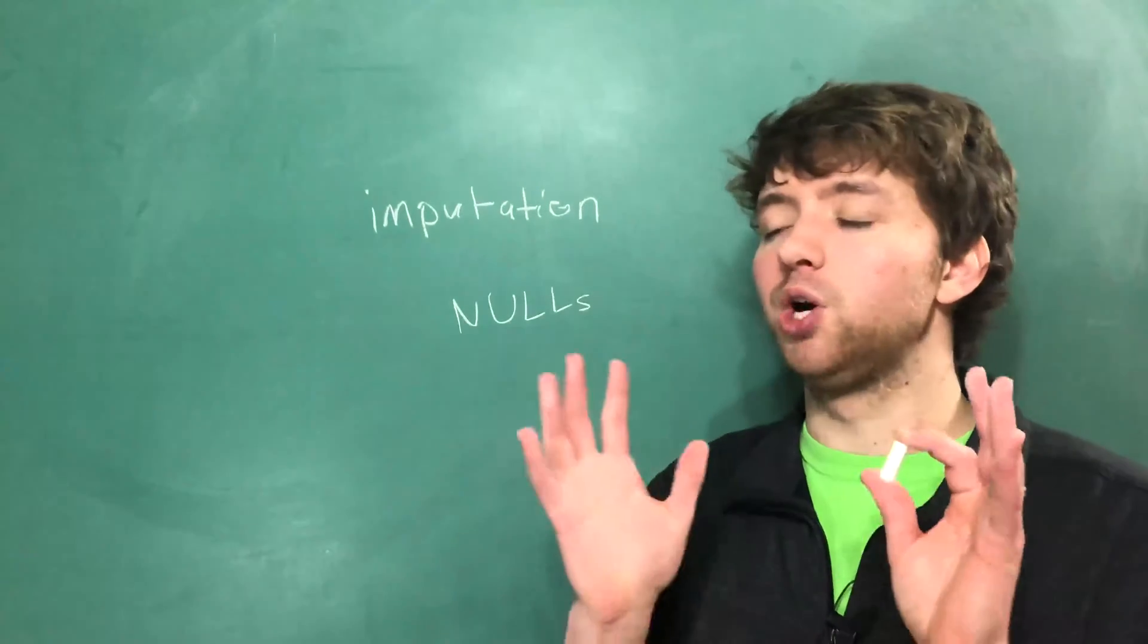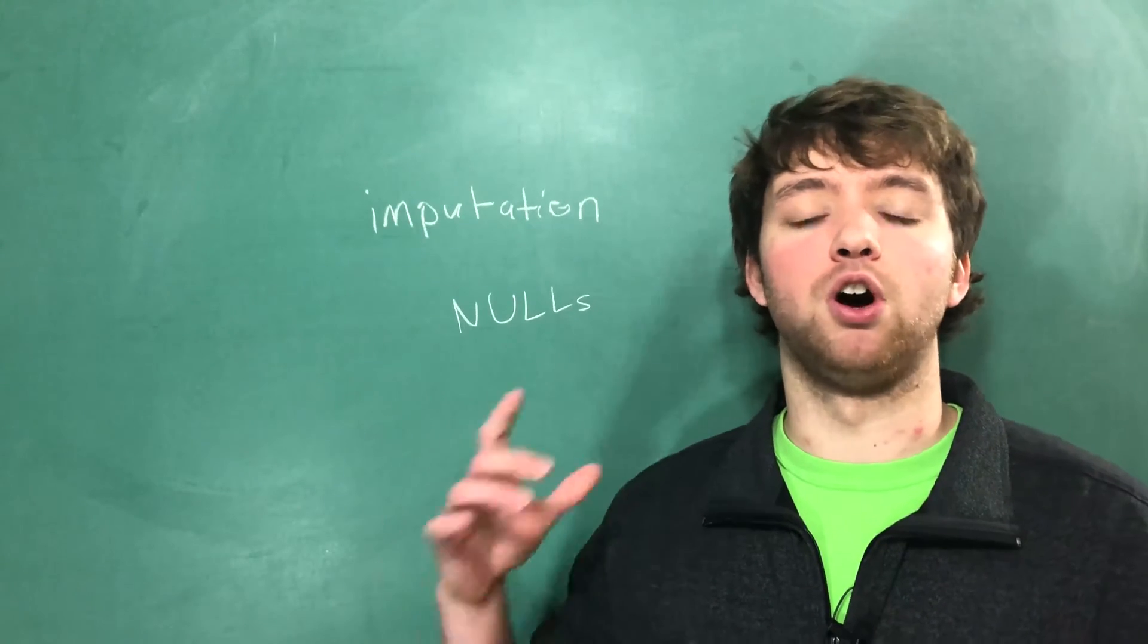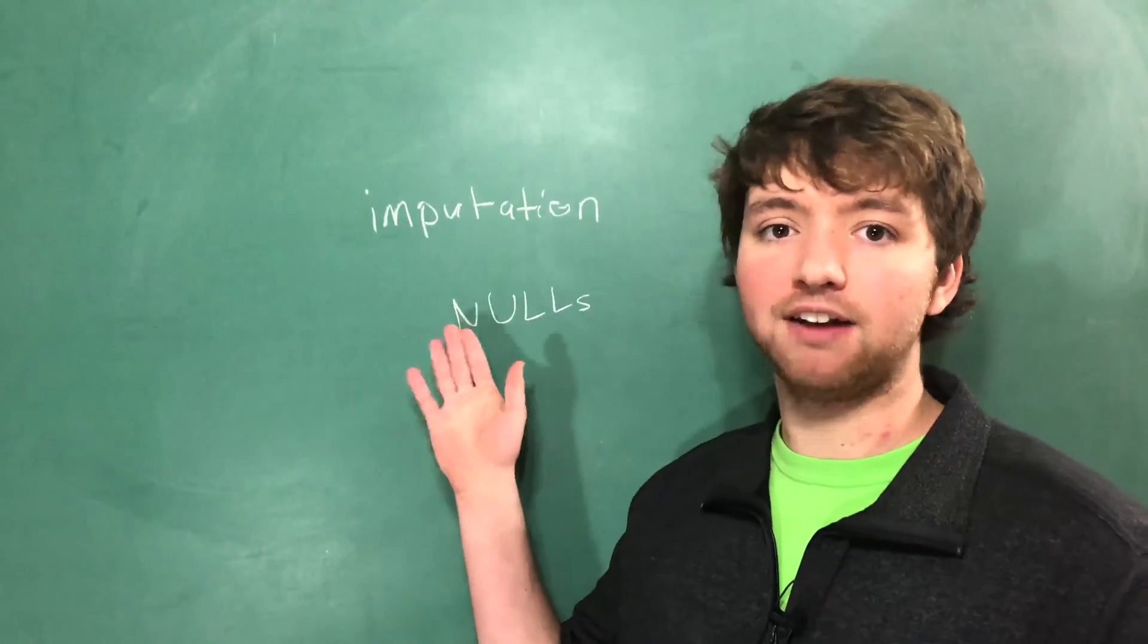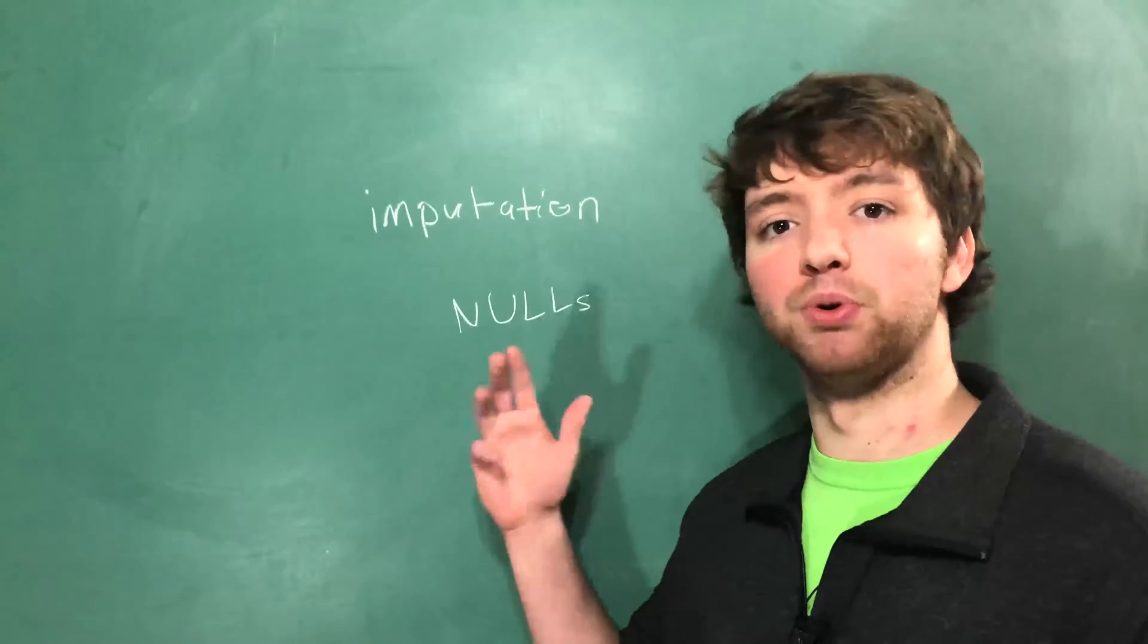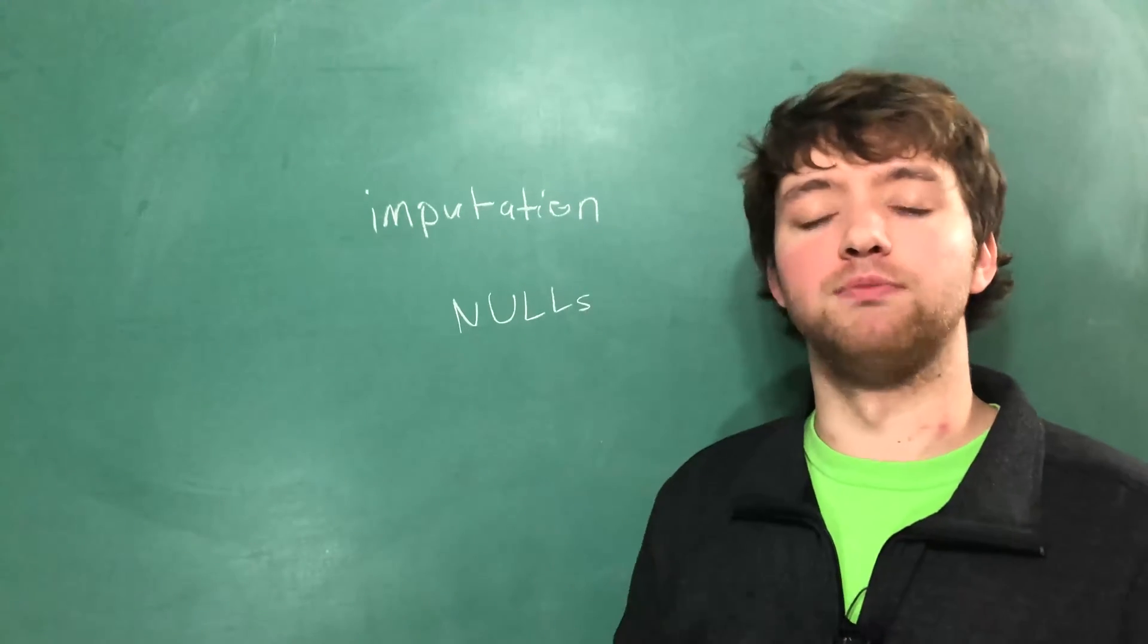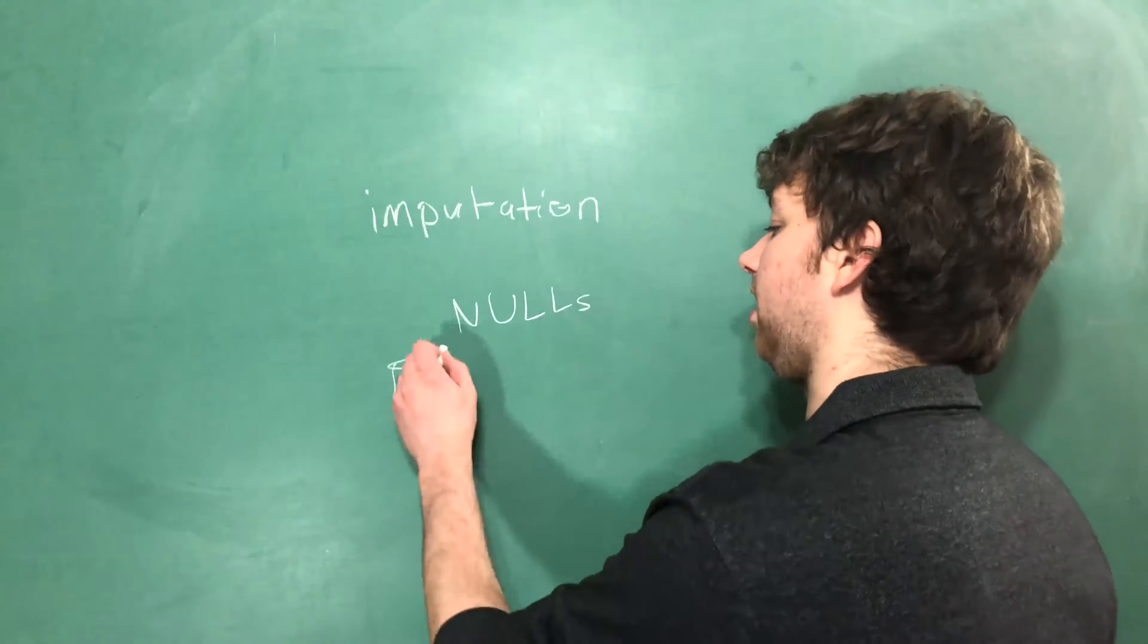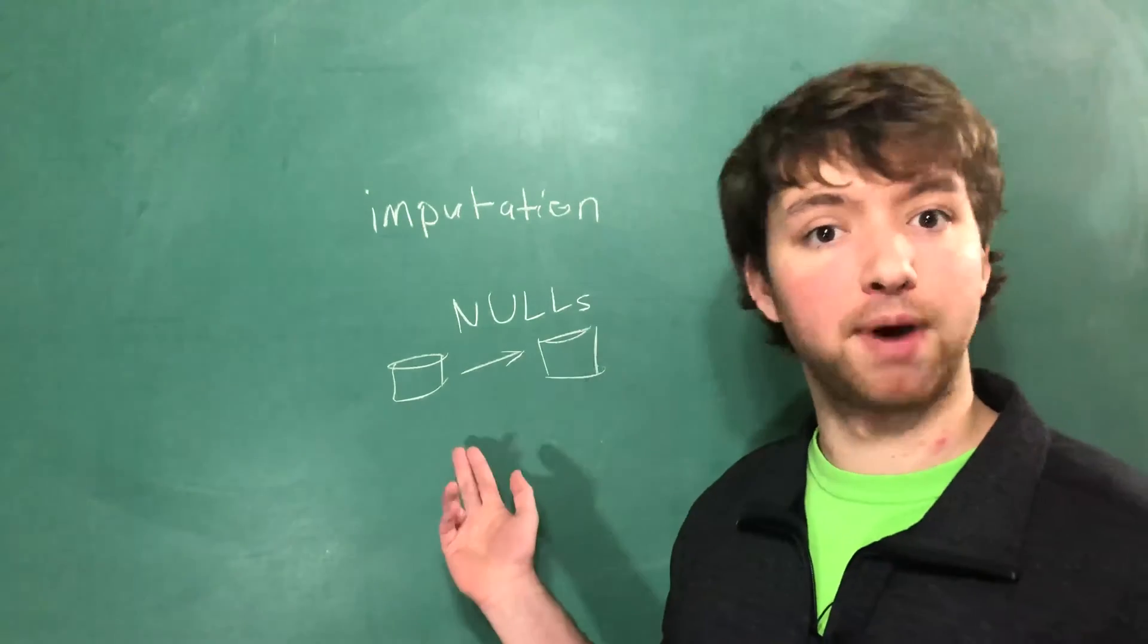Remember, we're not trying to change our data, we are trying to change our model for reality. If reality is most people have values for this but our data set tells us that most people don't, that is not a good model of reality. So we take that data set and we are going to convert it to a more realistic data set that represents reality better.